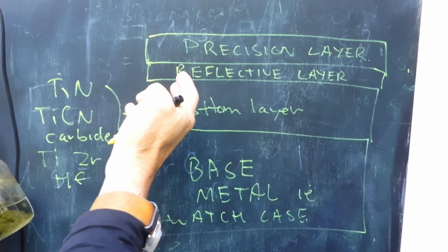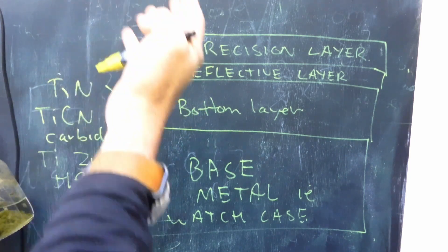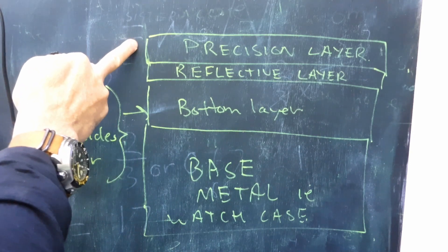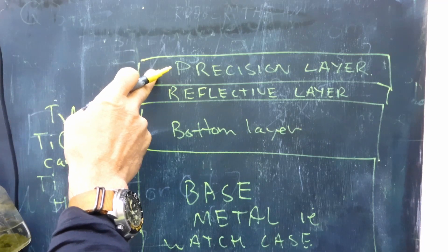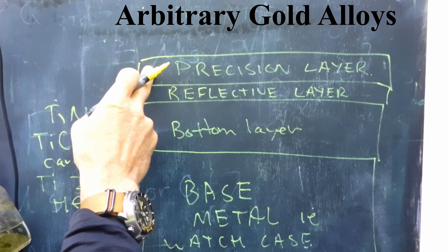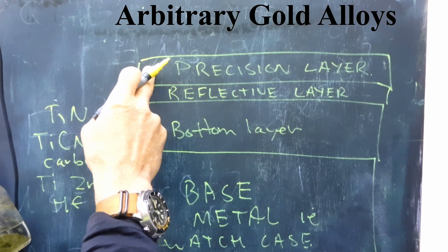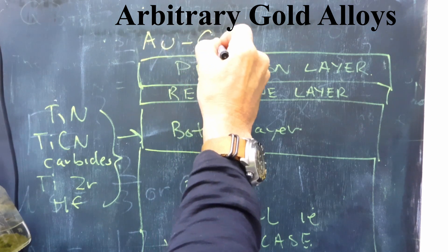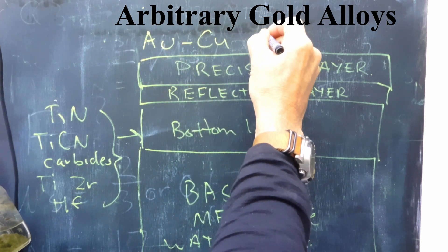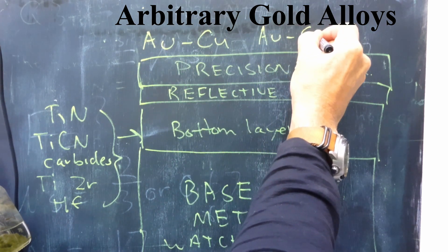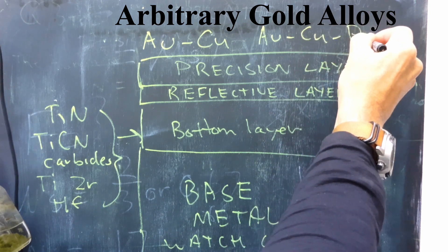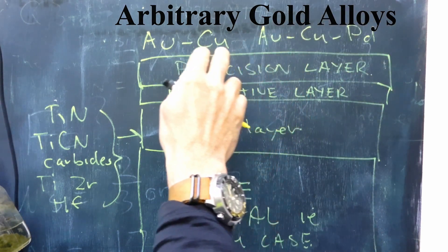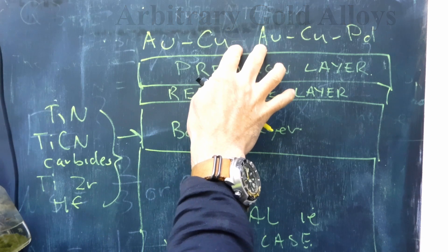Where does the real gold look come from? Well that comes from the precision layer. What goes here are gold alloys and they can be arbitrary gold alloys such as but not limited to things like gold-copper, you could have gold-copper-palladium alloys, so it just depends on what the manufacturer is going to use.